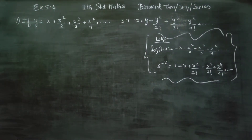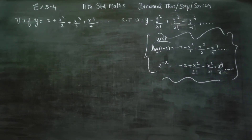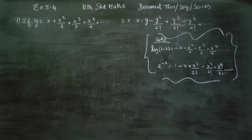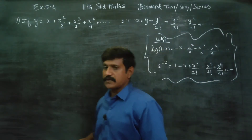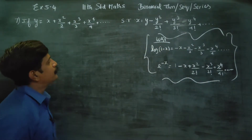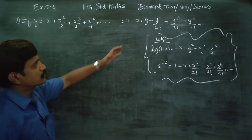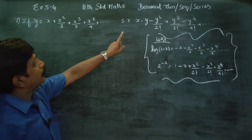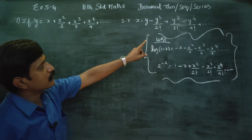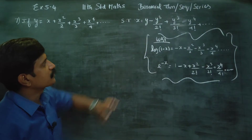Dear 11th standard students, I am Etro Karanagaran. In exercise number 5.4, sum number 7: if y is equal to x plus x square by 2 plus x cube by 3 plus x power 4 by 4, show that x is equal to y minus y square by 2 factorial plus y cube by 3 factorial.